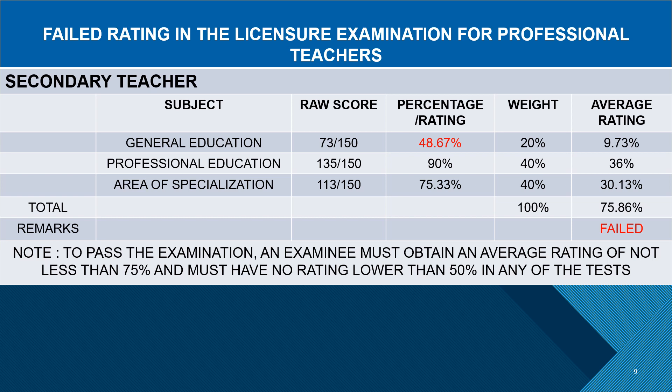How will an examinee fail the licensure examination for professional teachers? According to the Professional Regulatory Board for Professional Teachers, an examinee will receive a failed remark if they get an average rating below 75%, or if they get a rating below 50% in one of the subject areas — even though the total average is above 75%. As shown in this example, the examinee failed to get 50% or above in the general education subject, even though the total average rating was 75.86%.